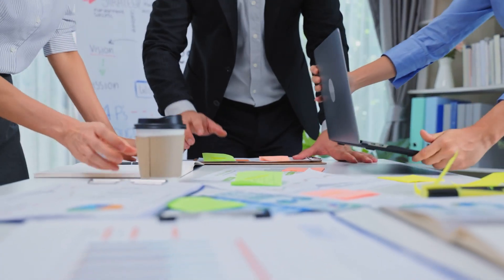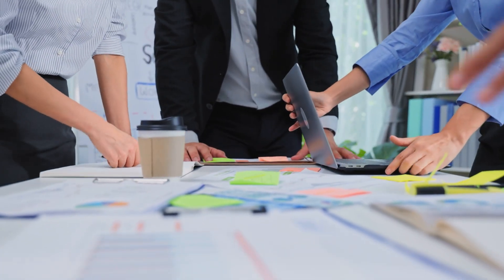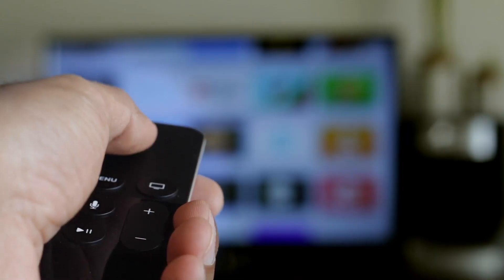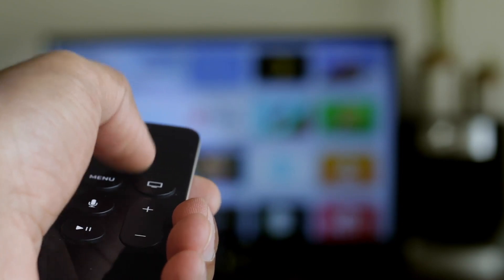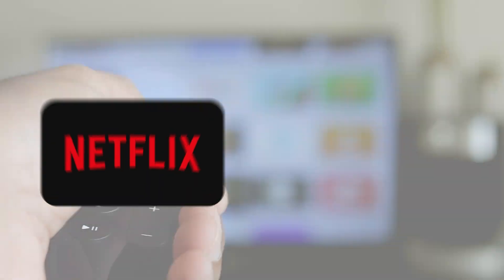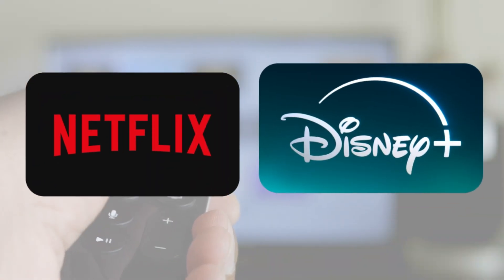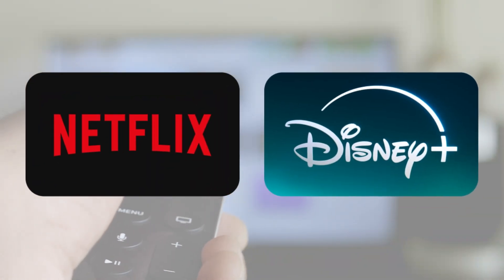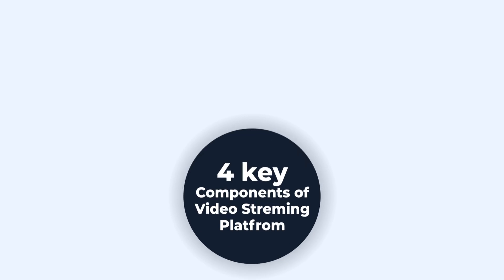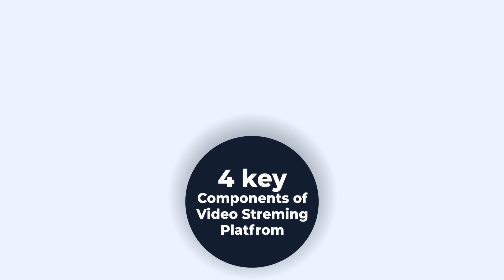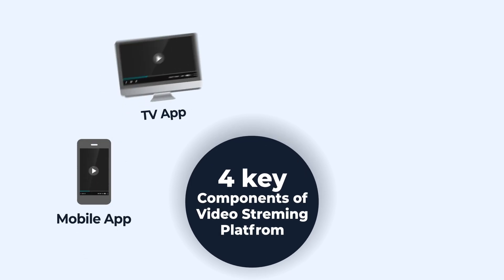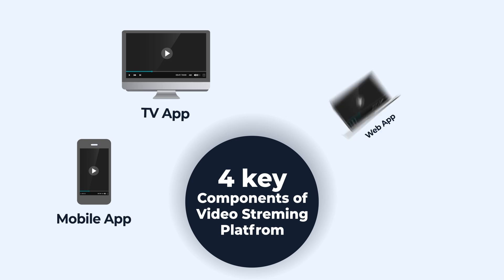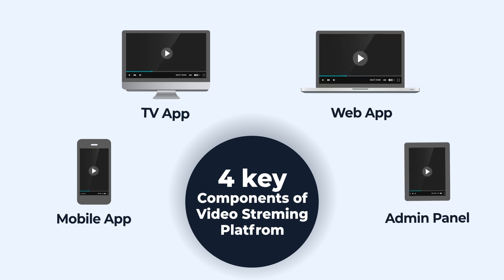Let us explain what we mean when we say a base model. A video streaming platform like Netflix or Disney Plus consists of a common structure. All of them consist of four key components, which are: a mobile app, a TV app, a web app, and an admin panel.